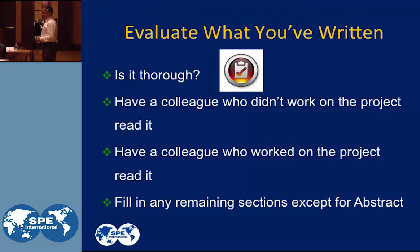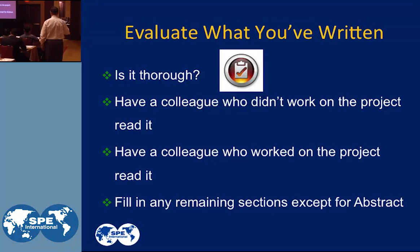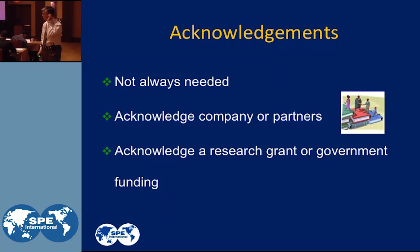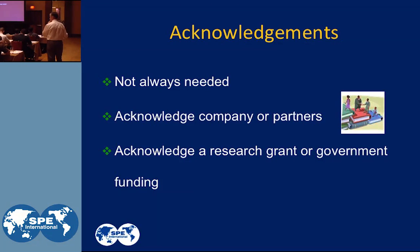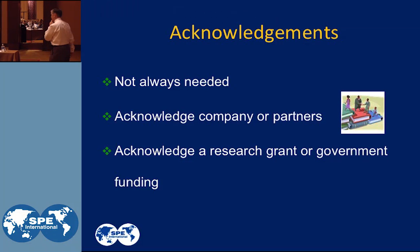Fill in any remaining sections except for the abstract — ones like laboratory procedures and other detailed sections. Acknowledgements: we often forget about acknowledgements, but it's a very important part of the paper writing process. You've got to acknowledge who gave you permission to write that paper, who may not be an author. Companies, partners, and research grants like university or government funding that allowed you to do this work must be acknowledged.